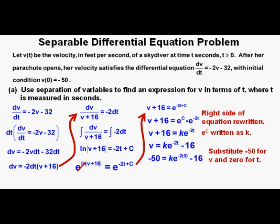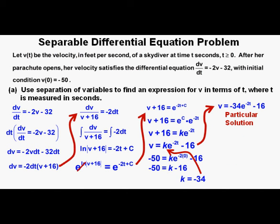Now we'll find the particular solution by substituting our initial condition: v equals negative 50 and t equals 0. Since e to the 0 power is 1, we have negative 50 equals k minus 16. Solving for k gives k equals negative 34, which we substitute back into the general solution. Our particular solution is v equals negative 34e to the power of negative 2t minus 16. This is our answer to Part A.